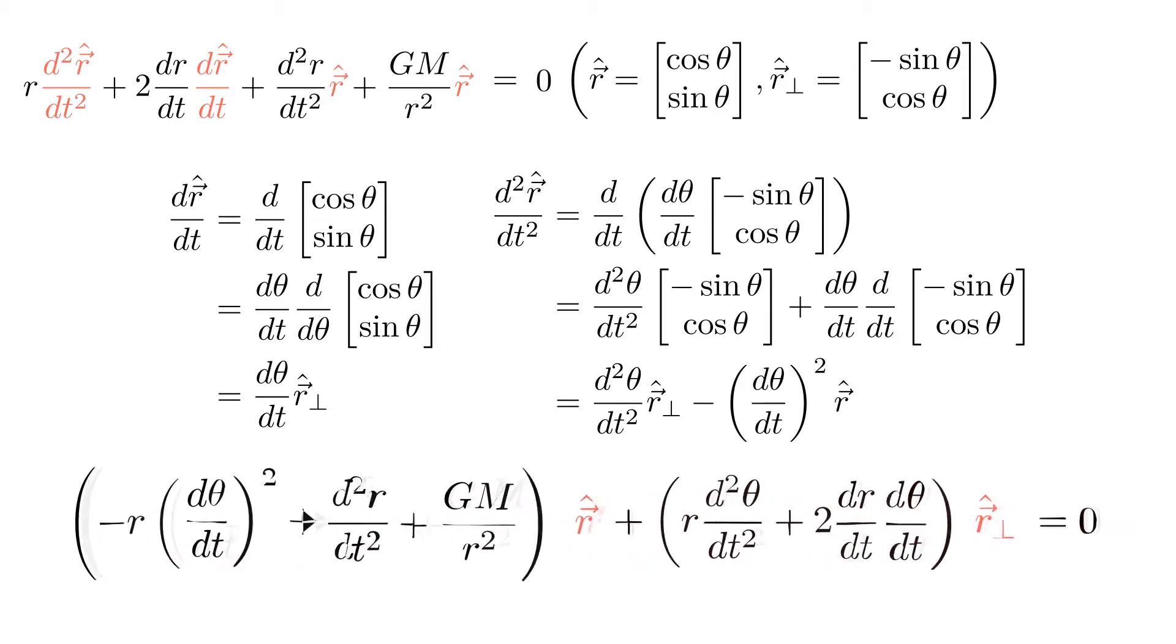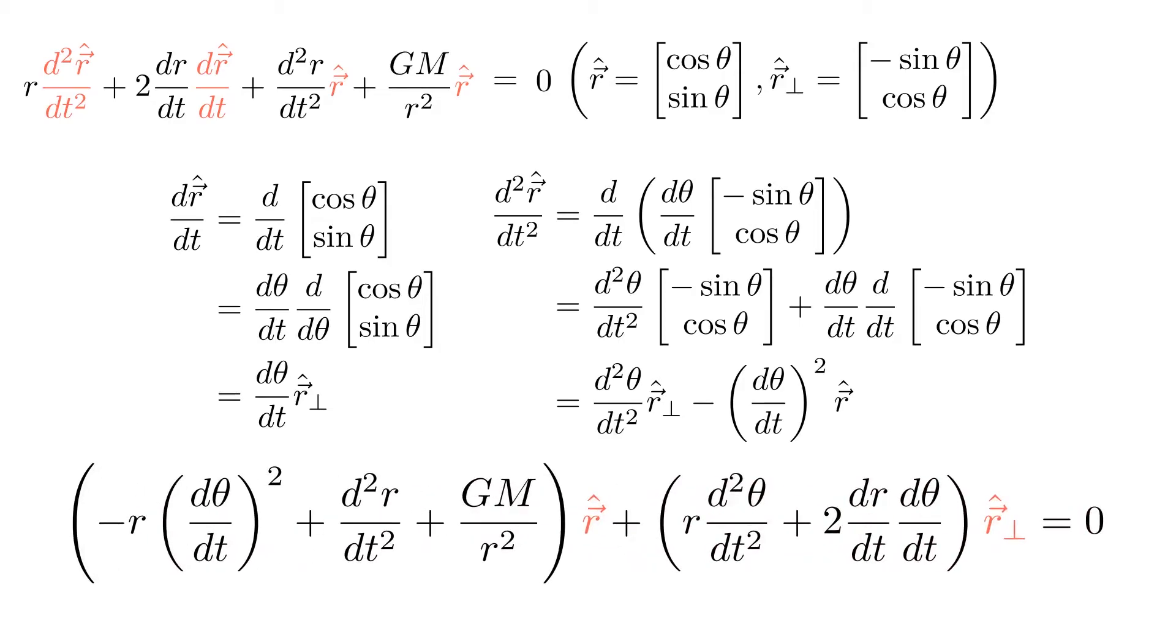We can rearrange this expression into a linear combination of these two vectors. Since the two vectors are linearly independent, i.e. in different directions on the 2D plane, their coefficients must be both zero.